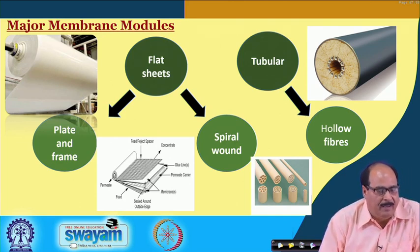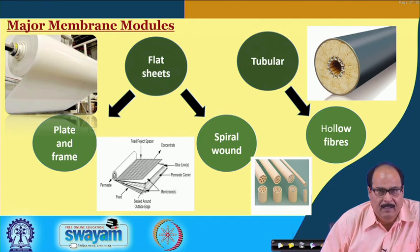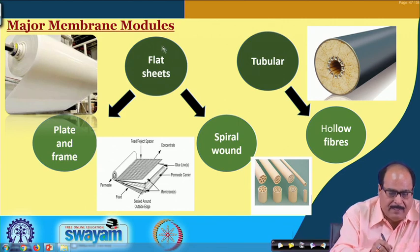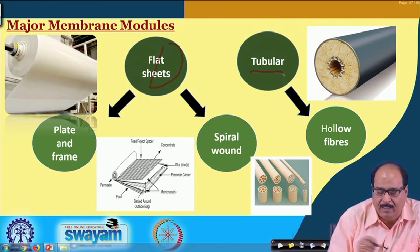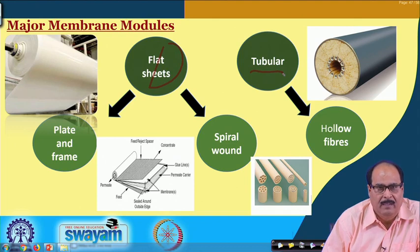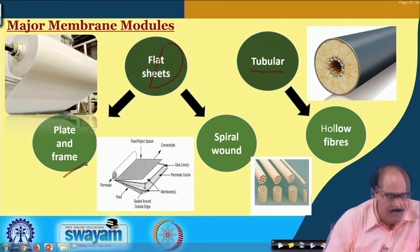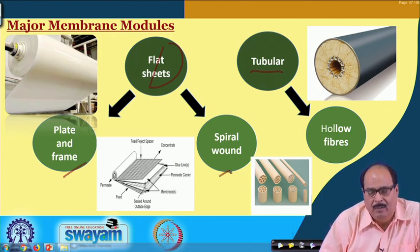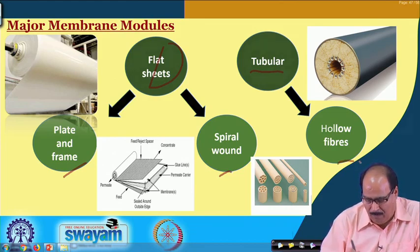As far as membrane modules are concerned, there are major membrane geometries: flat sheets and tubular membranes. Flat sheet geometry includes the plate and frame module and the spiral wound module. The tubular module may be the hollow fiber.